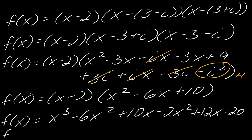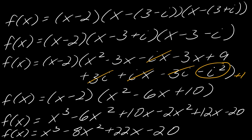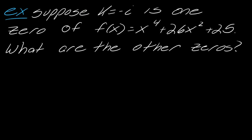Finishing the multiplication with (x minus 2)(x² minus 6x plus 10) gives x³ minus 6x² plus 10x minus 2x² plus 12x minus 20, which simplifies to the final answer: x³ minus 8x² plus 22x minus 20.